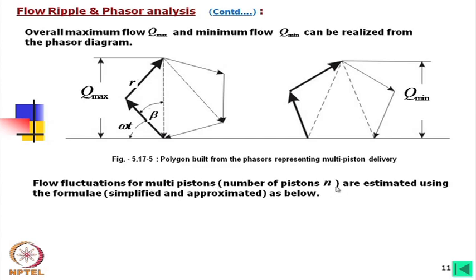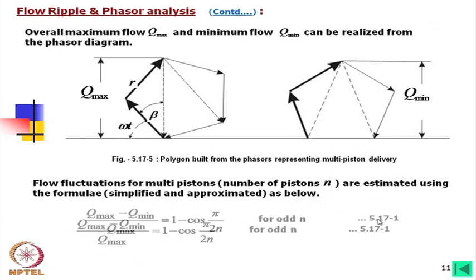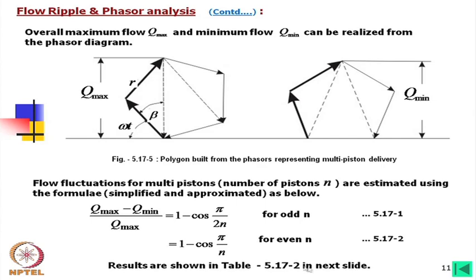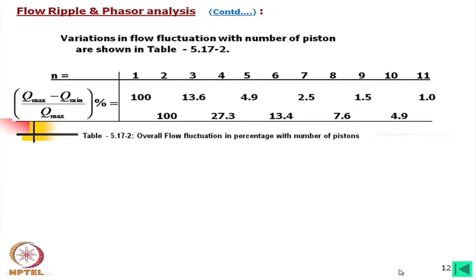Flow fluctuation for n pistons is estimated using simplified approximate formulas: for odd n, the fluctuation ratio is 1 − cos(π/2n), and for even n, it is 1 − cos(π/n), where n is the number of pistons. These values are presented in a table for multiple different cylinder counts.